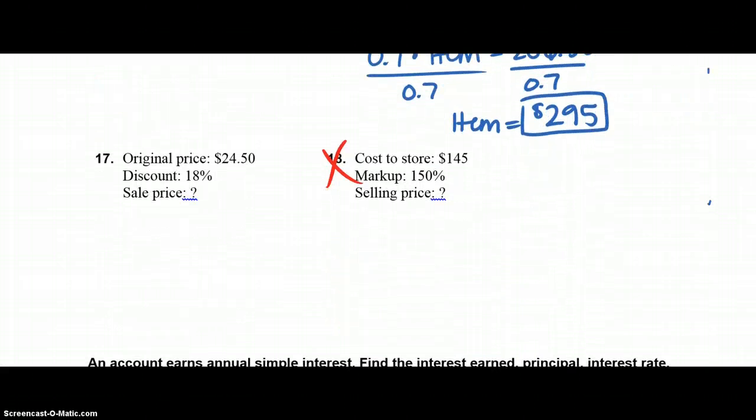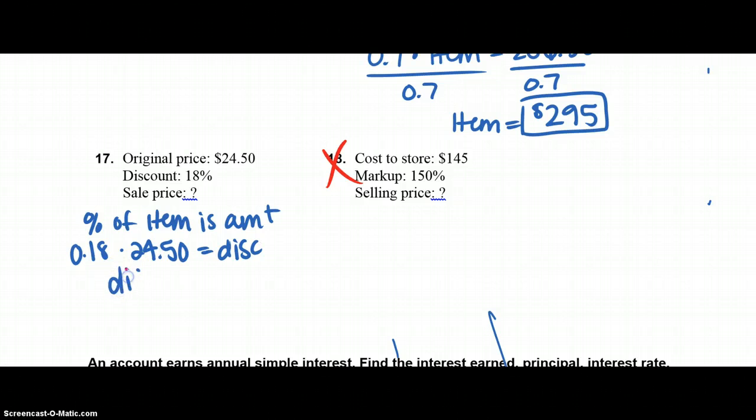17, the original price is $24.50, the discount was 18%. Find the sale price, percent of item is amount is my first step always. So 0.18 times my item, which is $24.50, is my discount. So my discount is $4.41, so I take $24.50, subtract the discount, the amount that I saved, and that is equal to $20.09.